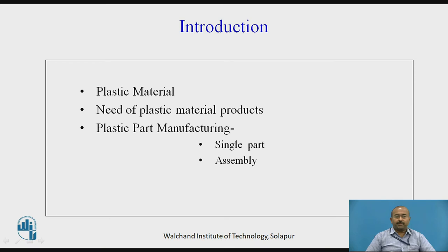In the introduction, let us see a little bit of discussion about the plastic material — the need of plastic material for various products, plastic part manufacturing and their categorization. As we know, for any particular product, material selection is a very important critical stage. In consideration with all the advantages and optimized properties, the material is selected for the fulfillment of working and environmental conditions. Plastic material carries many positive optimized properties, like easily moldable, non-magnetic, bad conductor of electricity, non-corrosive, and so on.